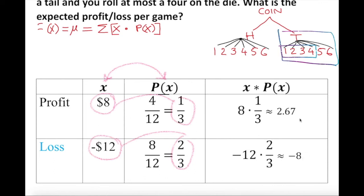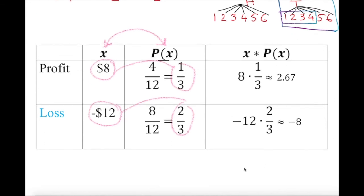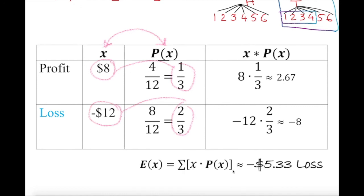Now if I add these products — remember this is a summation — I get the expected value. Adding $2.67 and negative $8 gives a net loss of negative $5.33. So the expected profit is actually a loss of $5.33. As you can see, gambling is not fun sometimes.